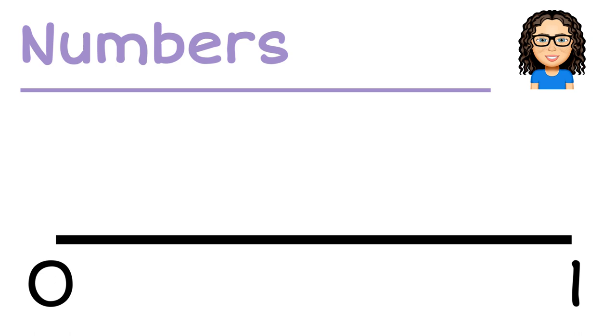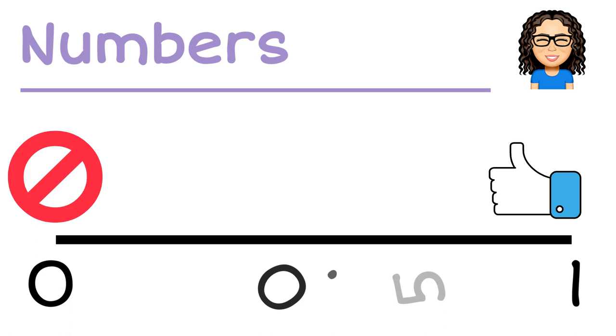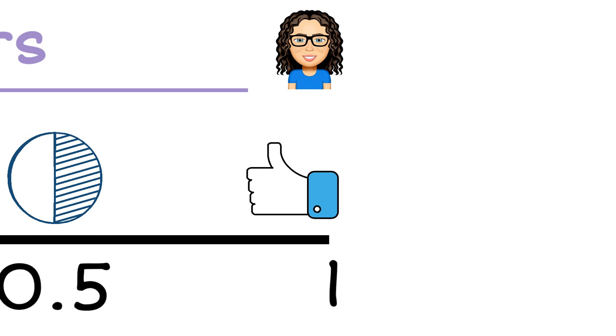When I'm looking at numbers, probabilities can take any number between zero and one. Zero means it cannot happen, one means it absolutely will happen, and halfway between, 50-50, is an even split.